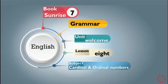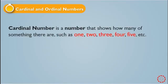Today I talk about cardinal and ordinal numbers. A cardinal number is a number that shows how many of something there are. It talks about an amount or quantity of something.